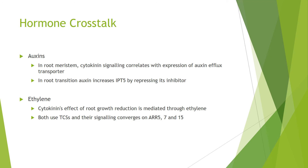Another interesting hormone is ethylene, which also uses a two-component system just like cytokinin. Cytokinin and ethylene are linked because the effect of cytokinin — root growth reduction — is mediated through ethylene. Both use two-component systems, so the signaling converges on some response regulators, allowing crosstalk between the two pathways.